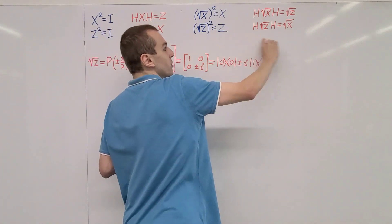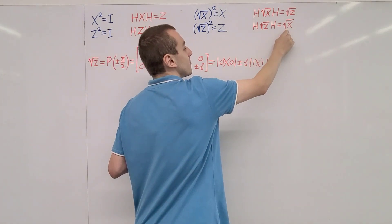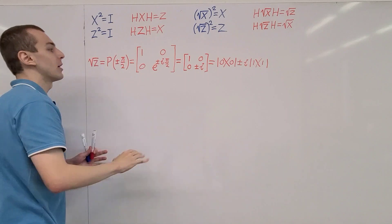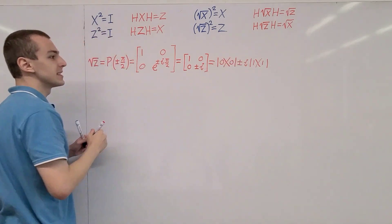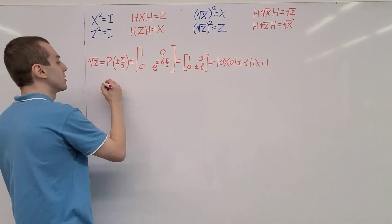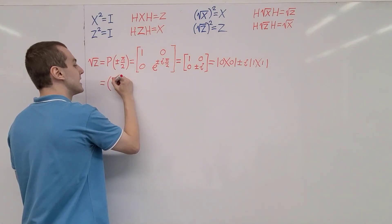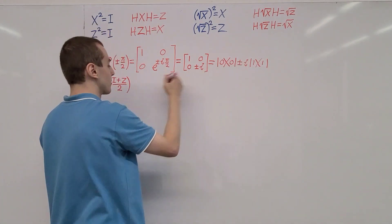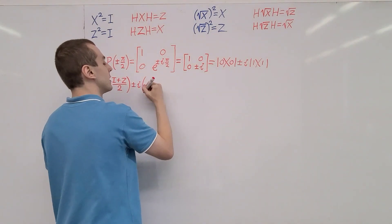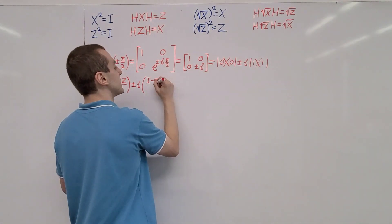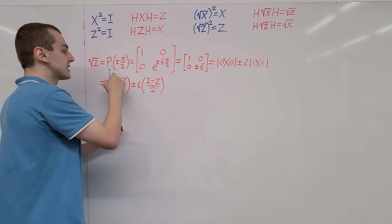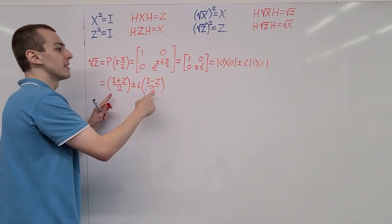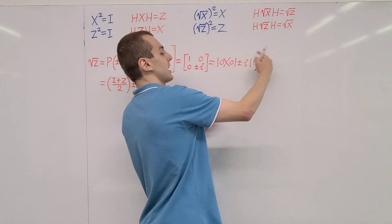Now let's use these properties to find the square root of X. We can express the square root of Z in terms of Pauli matrices. The ket-bra combination in Dirac notation can be written as the identity plus Z over 2, and then plus or minus i times the identity minus Z over 2. If you write this out in matrix representation, take the sum and difference, and divide by 2, you get exactly the same matrix representation as before. This top-left entry corresponds to the identity plus Z term, and the bottom-right entry to the identity minus Z term.